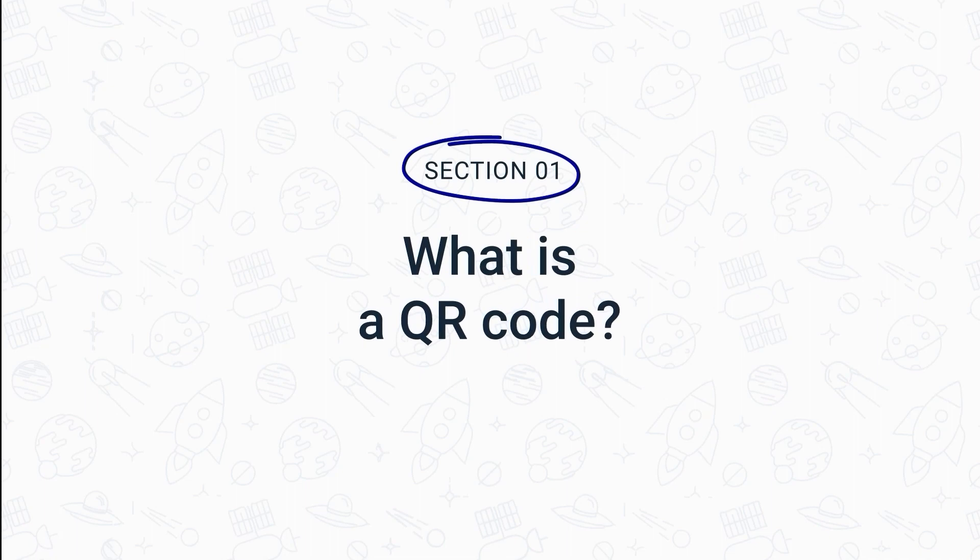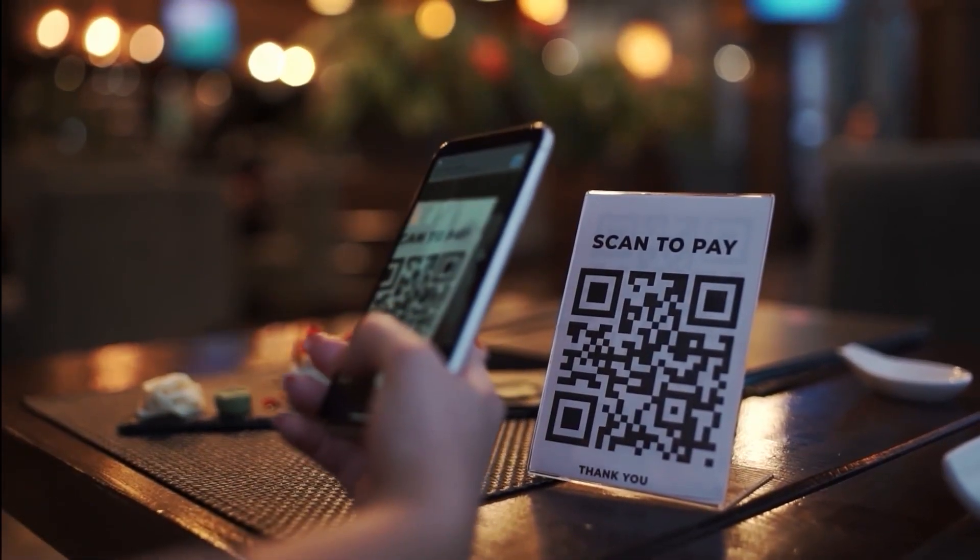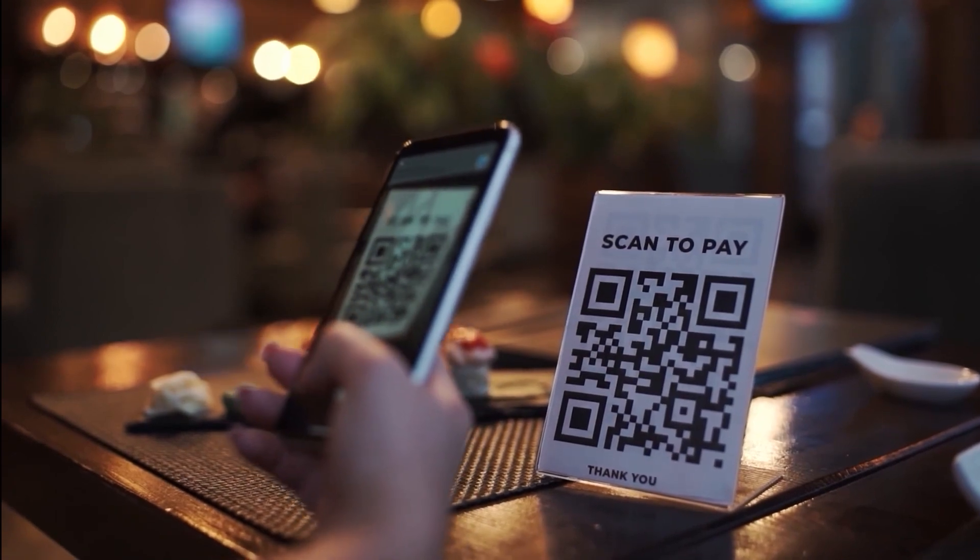A QR code refers to a scannable code with a square-shaped grid that stores encoded data in the form of a series of pixels. You can scan a QR code with your digital device using a camera to access this data. The primary purpose of a QR code is to track information about products. However, these days most smartphones come with built-in QR readers, so QR codes have successfully made their way into our everyday lives. And interestingly enough, they've become an irreplaceable tool for marketing and advertising industries, helping businesses to connect seamlessly with their customers.